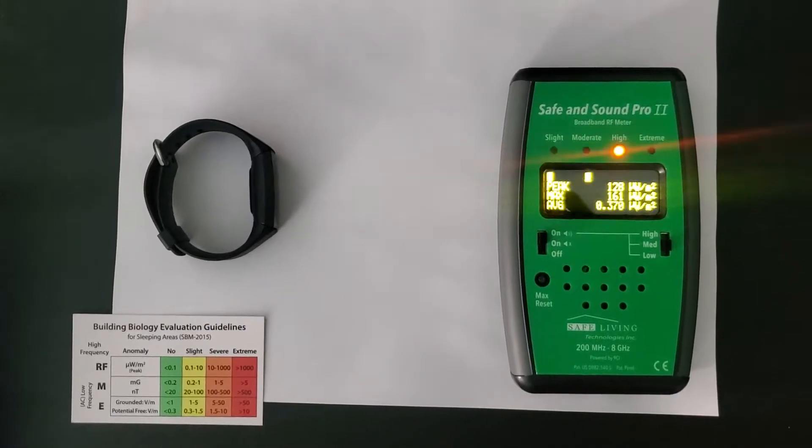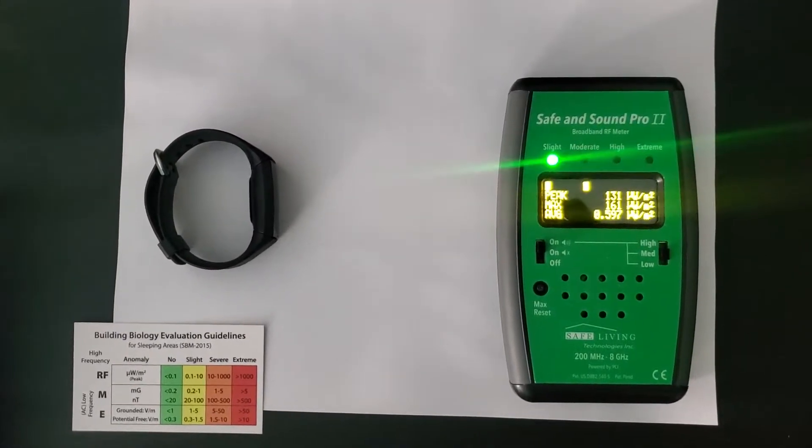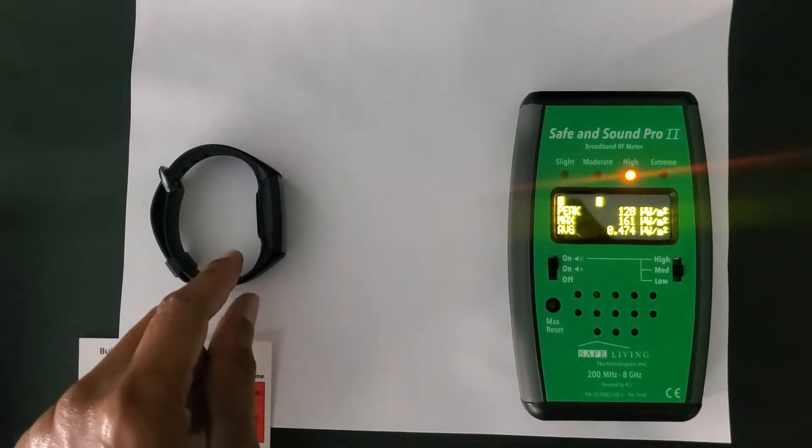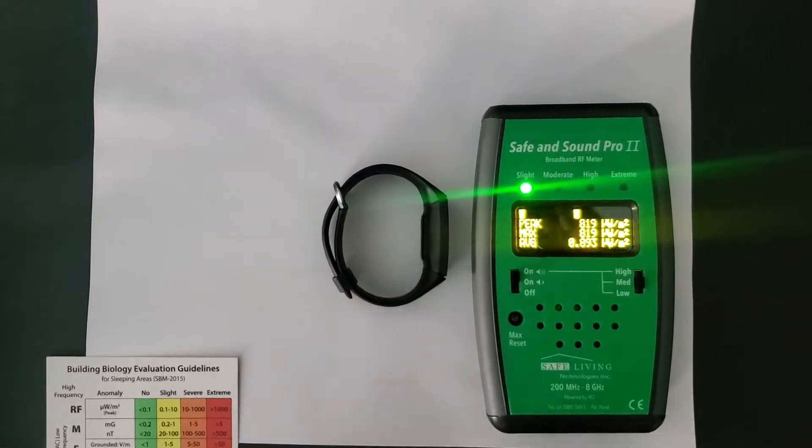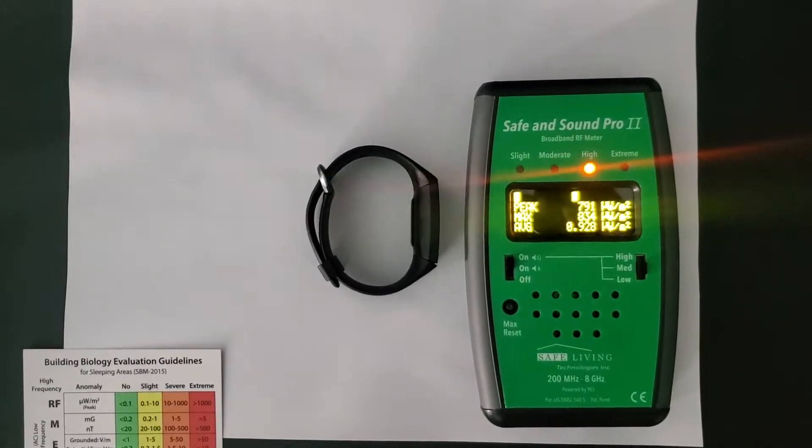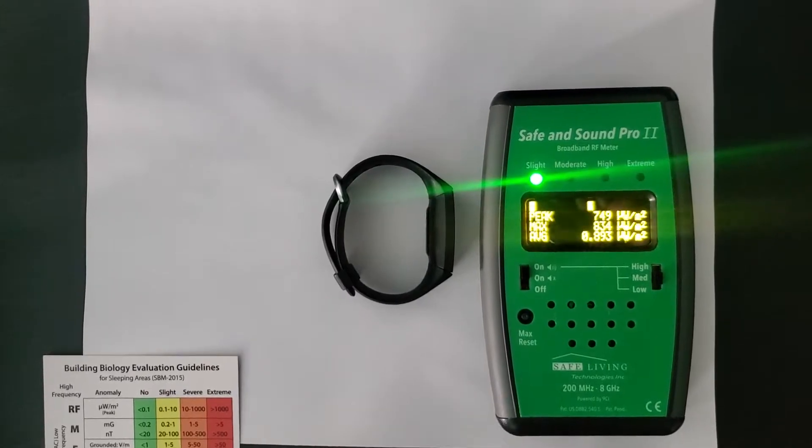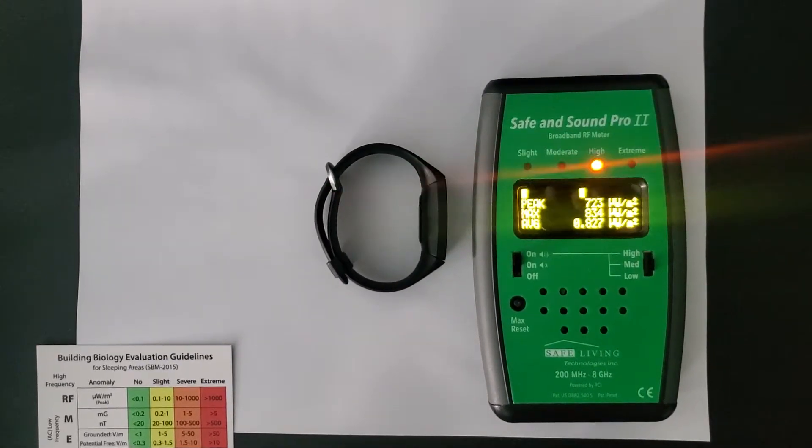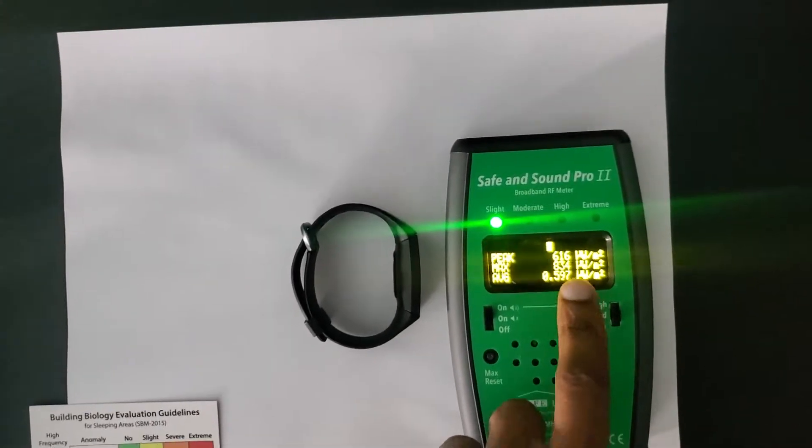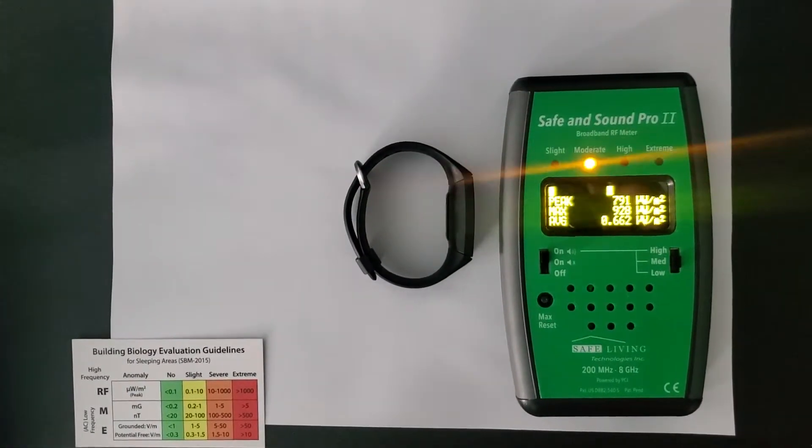So the pulsing that you hear is the Fitbit. Let's move it closer. You can see it went from, went up to 800 pulsing max, 834, 900.